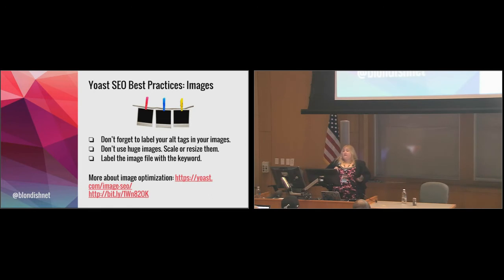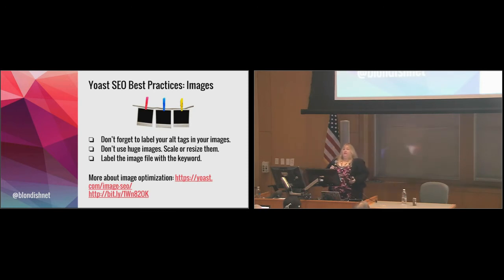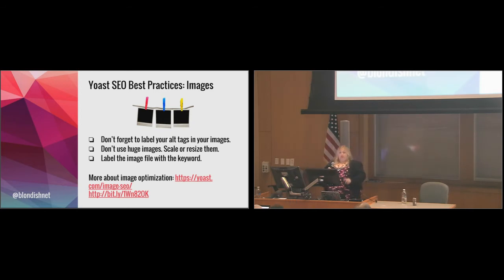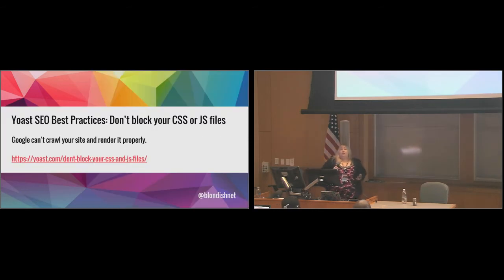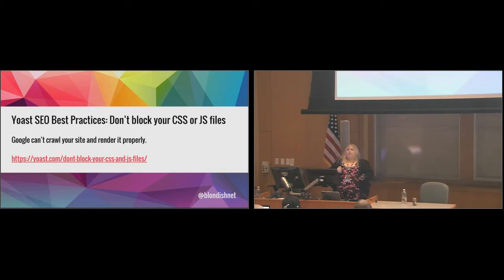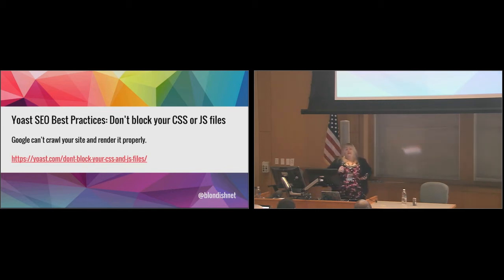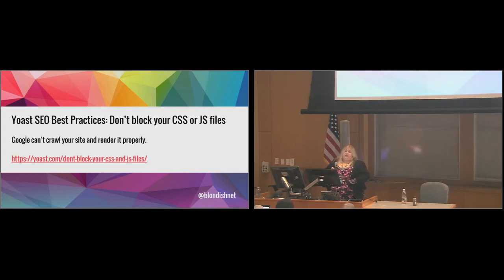Don't forget to label your alt tags in your images — preferably put your keyword in at least one of them. Don't use huge images — scale or resize them. Label the image file with the keyword as well. Don't block your CSS or JS files. Unfortunately, people still have this issue. Google can't crawl your site or render it properly if you do. If you've submitted to Google Search Console, you can see the line they're having issues with — it'll have a caution marker. Don't block your WP Admin or WP Includes either, because they have scripts that help your site be seen properly.